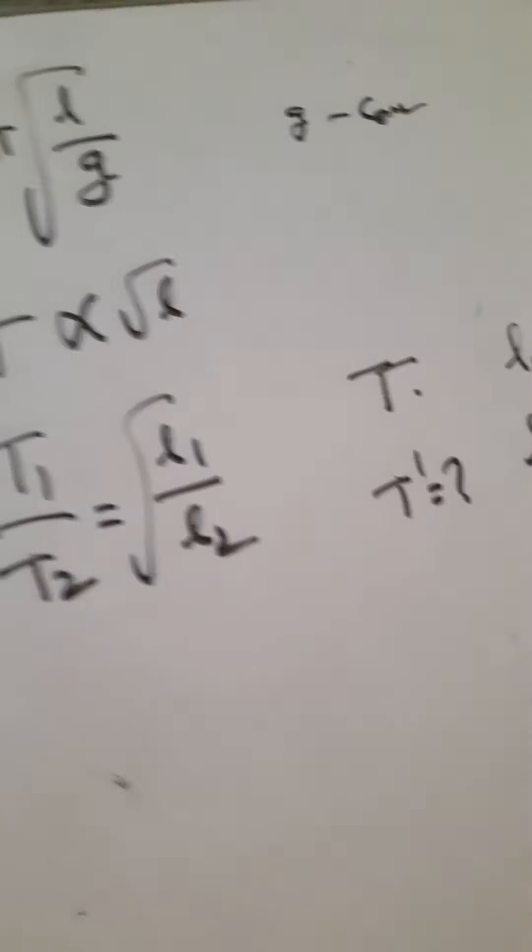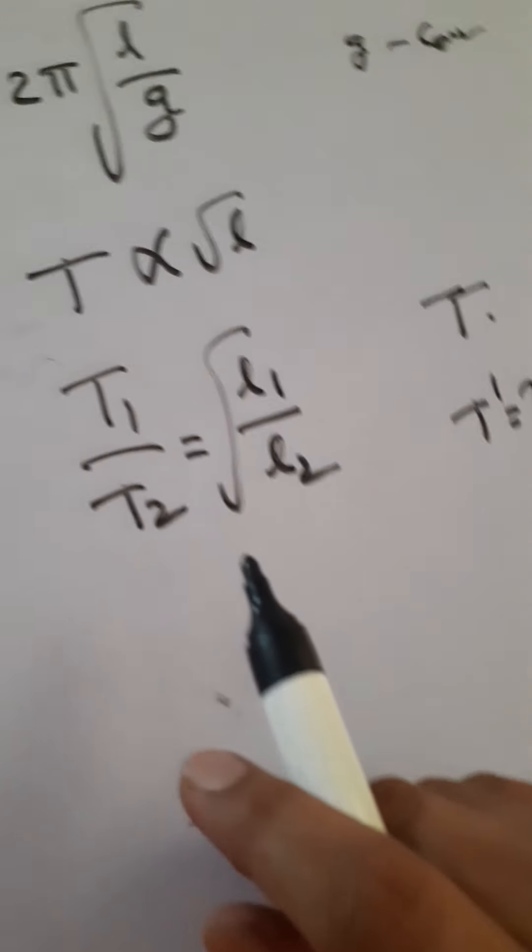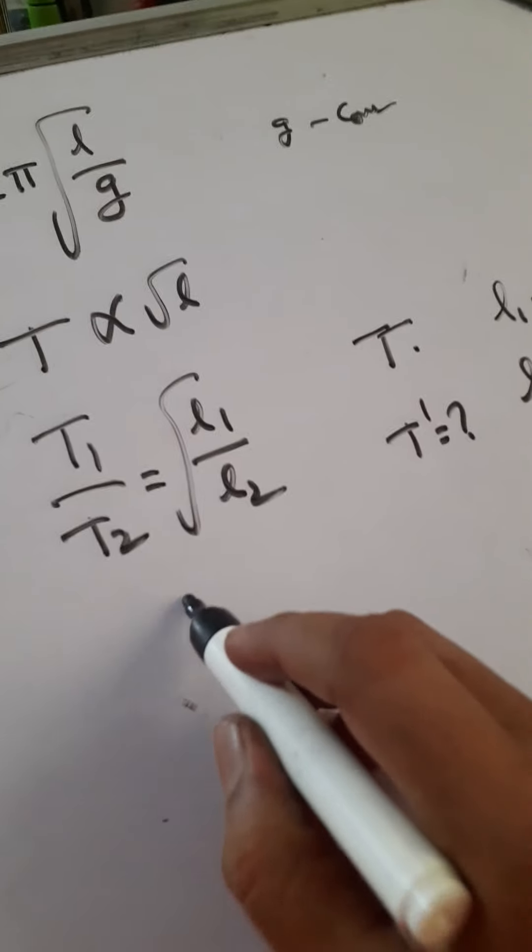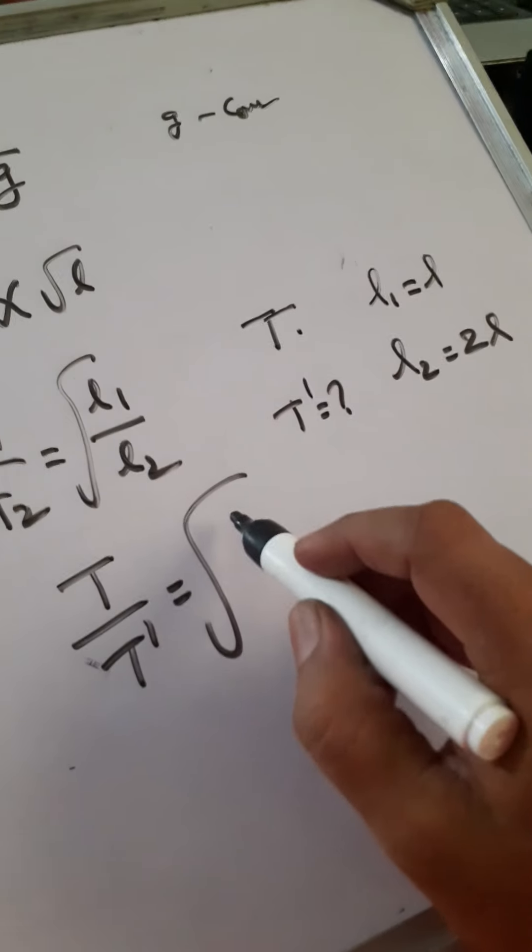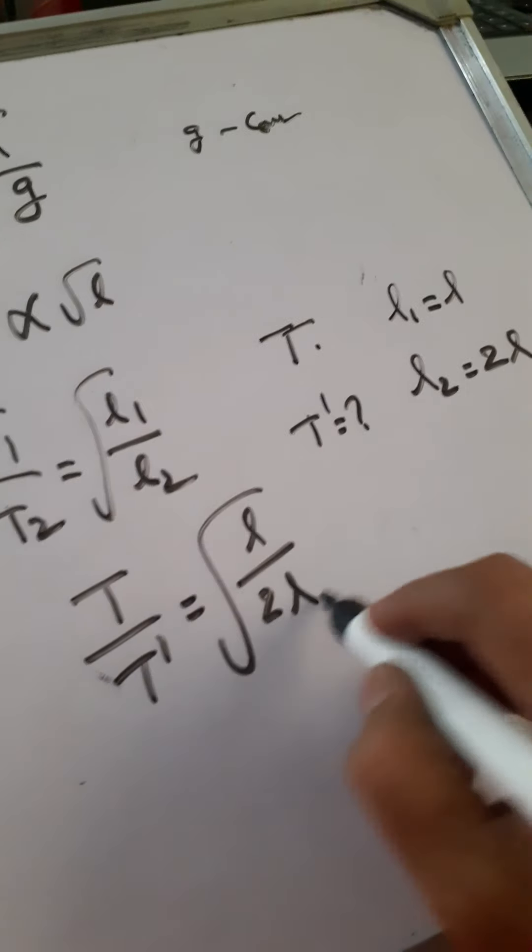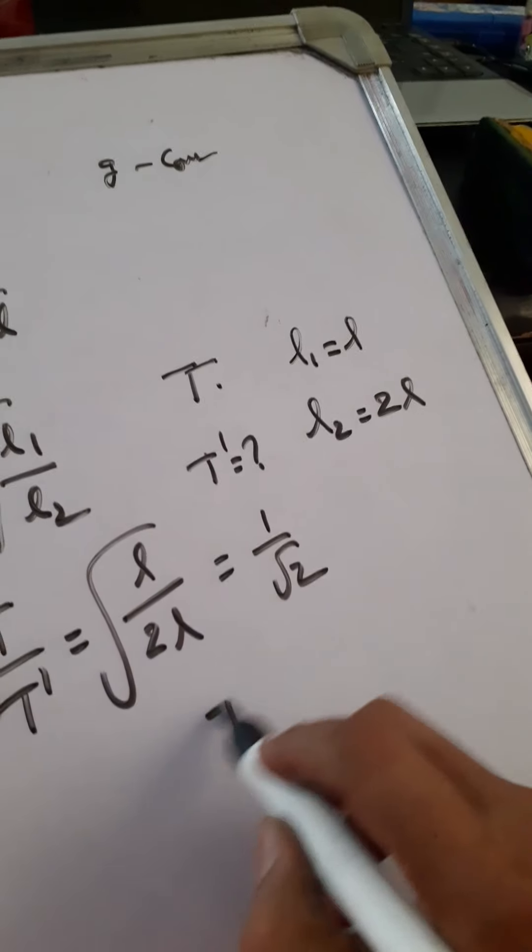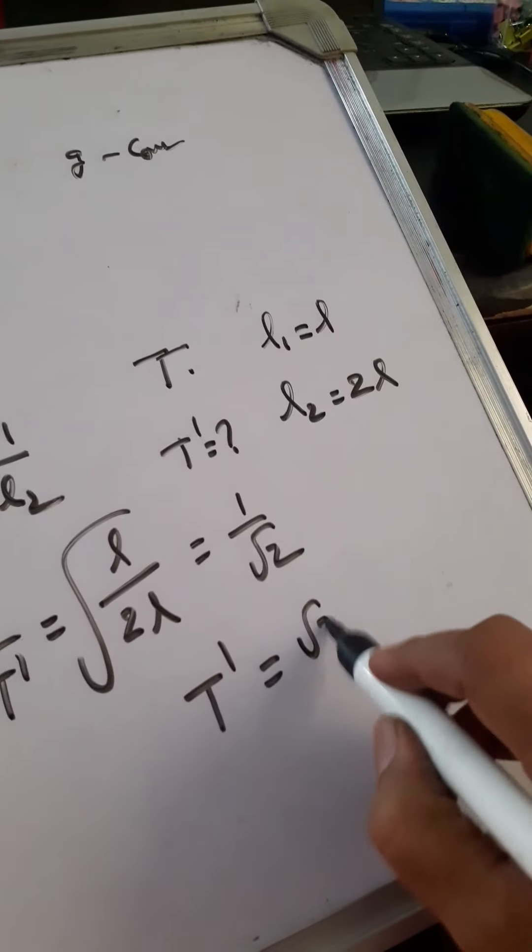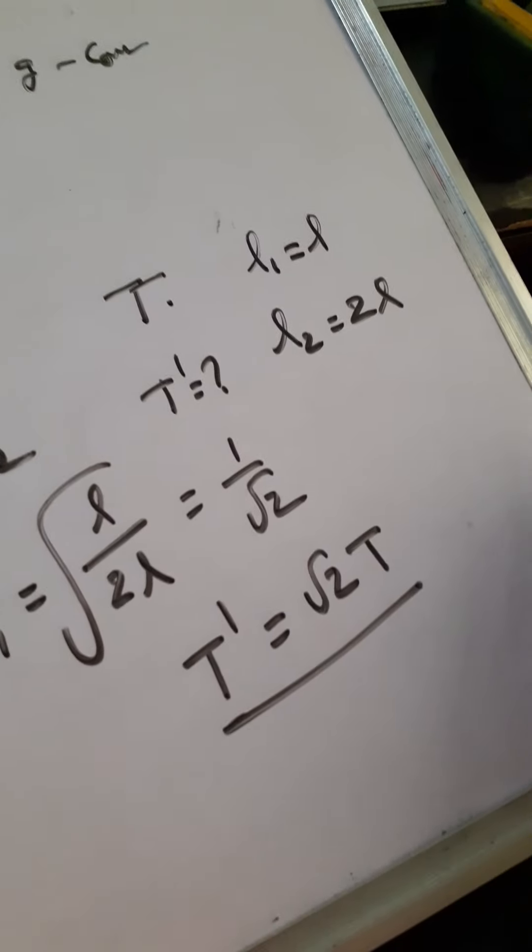If you know the relation between time period and length, T1 by T2 is root of L1 by L2. So T by T dash equals root of L by 2L. LL cancel, we are getting 1 by root 2. Therefore, T dash equals root 2T. So time period increased by root 2 times.